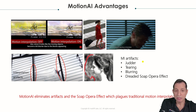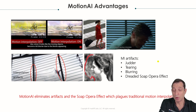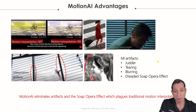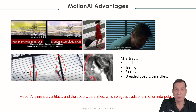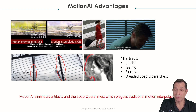These are artifacts like judder, tearing, blurring, and the soap opera effect that you'll find with most other motion interpolation options. With the Envy, we use AI to create a motion interpolation that can run without producing most of these same artifacts.